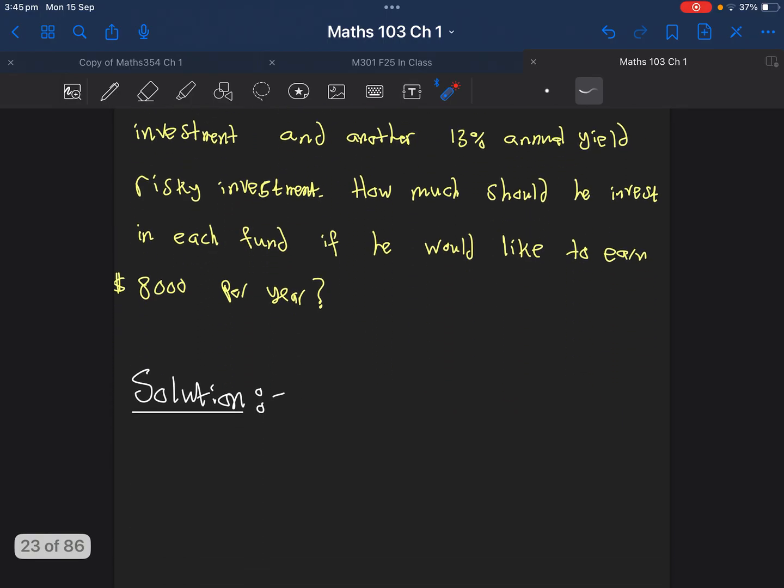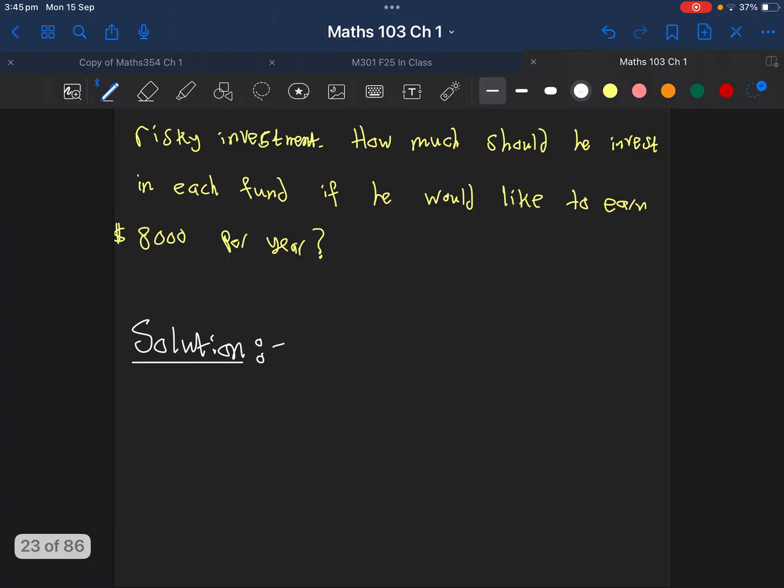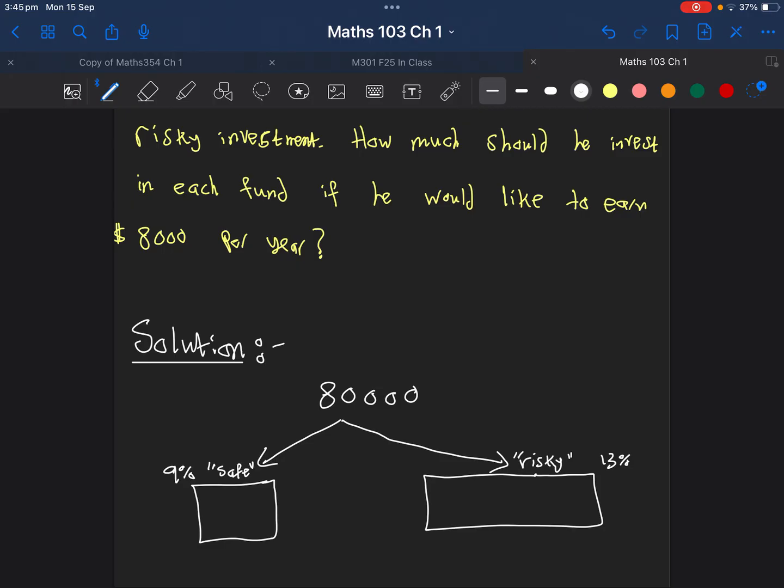If we go back to this question and analyze it, we'll start with $80,000. We have two funds: the first fund which pays 9% per year, the safe one, and another fund which yields 13%, the risky one. So we have two options to put the money - you put something here and something here and then check how much you will get as investment from each one of them.